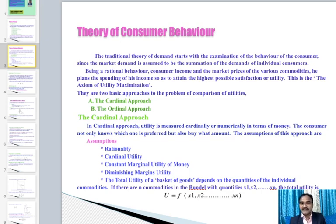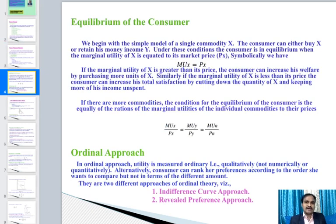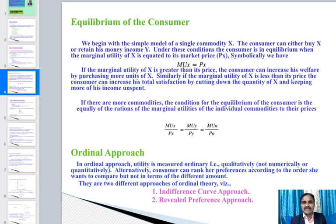If there are n commodities in the bundle with quantities x1, x2, ... xn, the total utility is U = f(x1, x2, ..., xn). For the simple model of a single commodity x, the consumer can either buy x or retain his given income y. Under these conditions the consumer is in equilibrium when the marginal utility of x is equated to its market price Px, symbolically: MUx = Px.